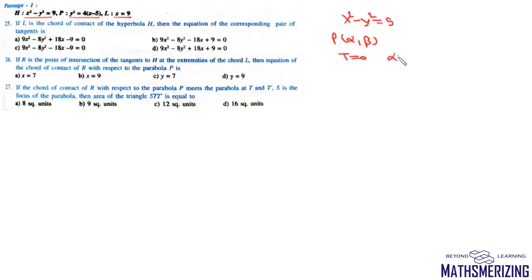Next question: let H be x² − y² = 9, parabola P be y² = 4(x − 5), and line L be x = 9. If L is the chord of contact of hyperbola H, then for hyperbola x² − y² = 9, if tangents are drawn from point (α, β), the chord of contact is αx − βy = 9. Since this chord is x = 9, we get α = 1 and β = 0, so tangents are drawn from the point (1, 0).